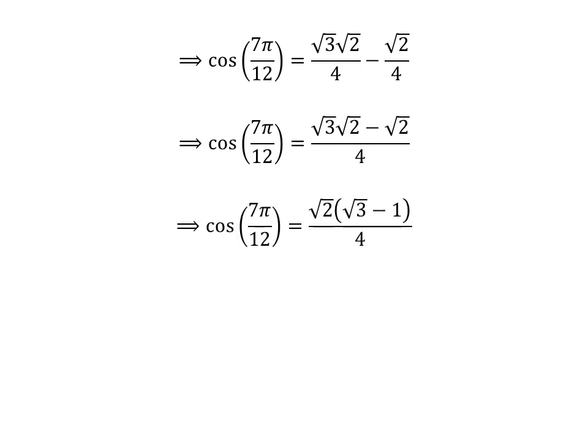Taking out the common factor square root of 2 in the numerator of the right-hand side gives us cosine of 7 times pi upon 12 is equal to square root of 2 times (square root of 3 minus 1) upon 4.